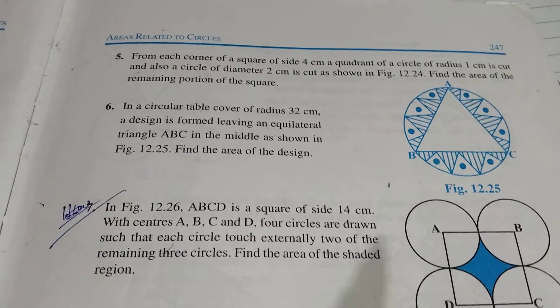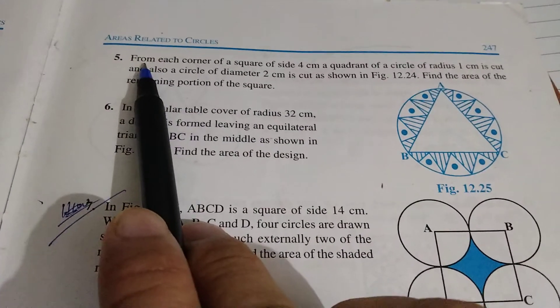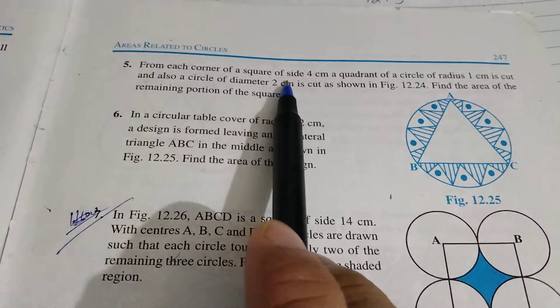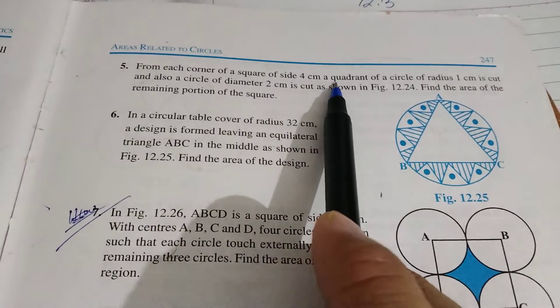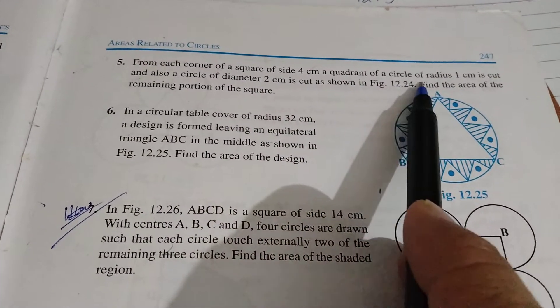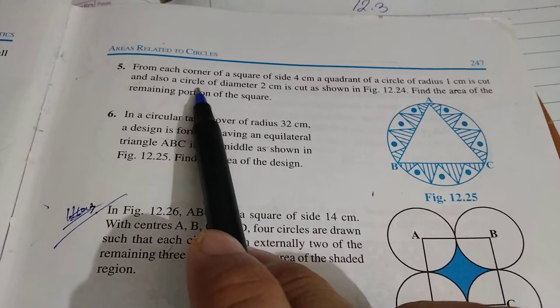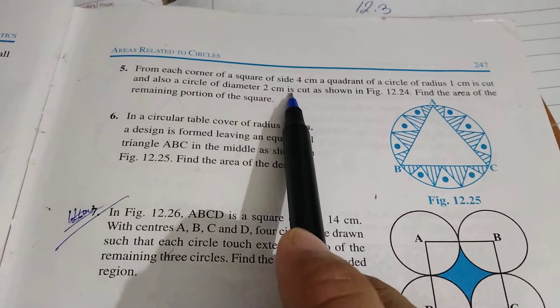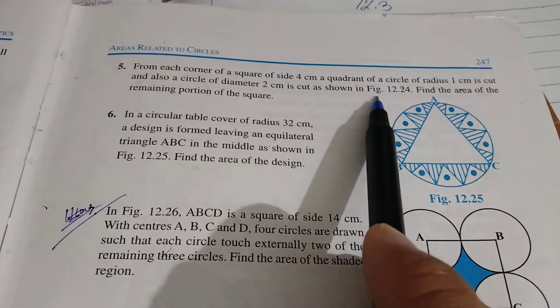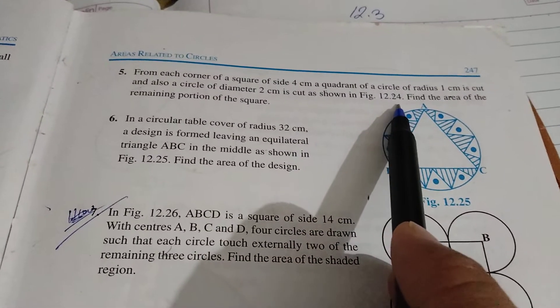We are going to do 12.3, question number 5. Our question is, from each corner of a square of side 4 cm, a quadrant of a circle of radius 1 cm is cut, and also a circle of diameter 2 cm is cut, as shown in figure 12.24.